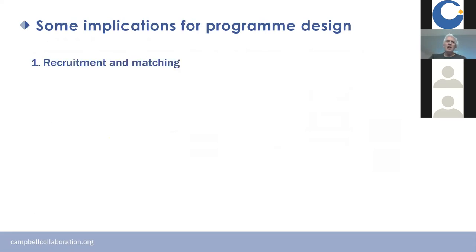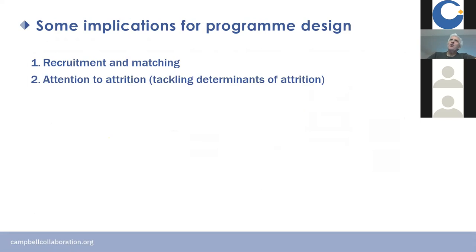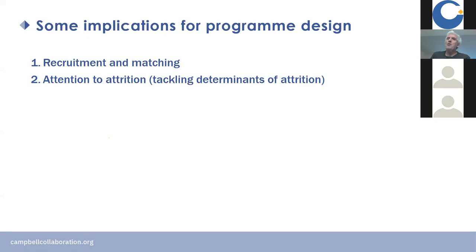Implications for programme design: recruitment of mentors and matching mentors matters. Attention to attrition is critical — process evaluations show enormous attrition. A review of mentoring programmes for youth justice found that 50% of youth assigned to a mentoring programme did not take part at all, and 50% of those who did take part didn't complete the programme. So only a quarter of kids assigned actually completed the programme — really high levels of attrition, which undermines effects and cost-effectiveness. Identifying what causes attrition and tackling its determinants is key.